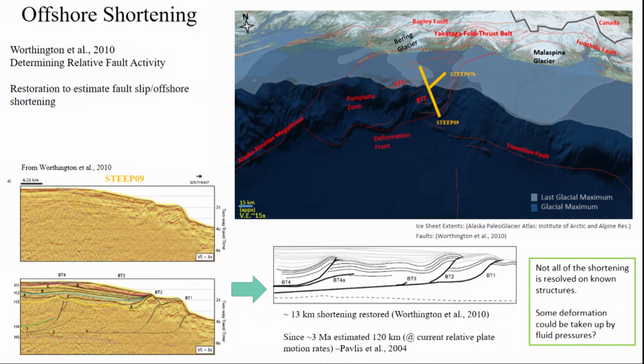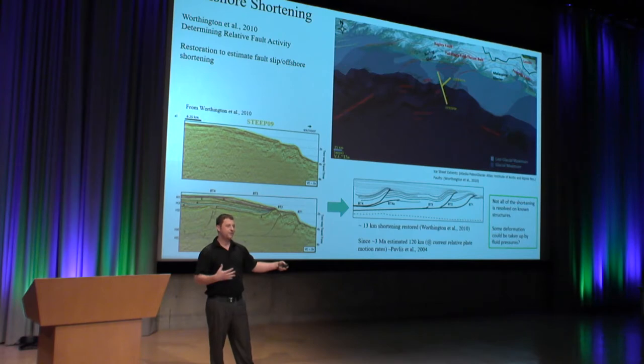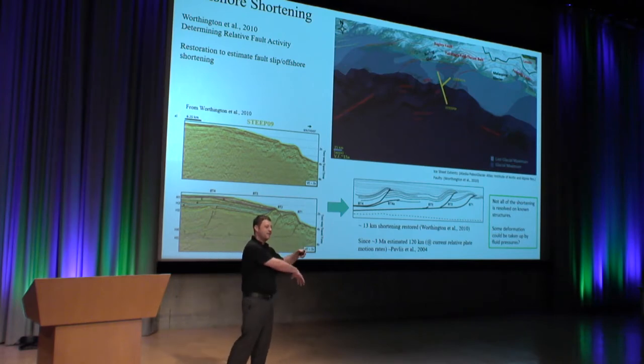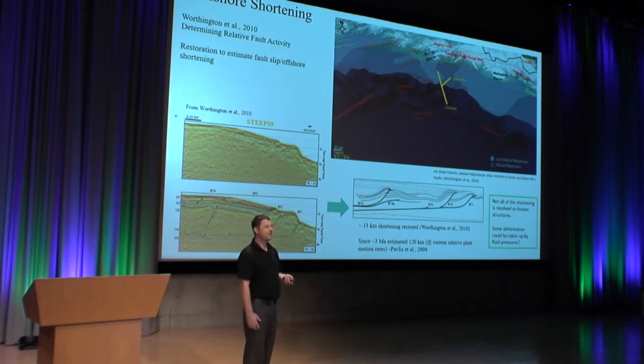What we see here are a couple of seismic lines, one of which has been interpreted. We could imagine trying to restore these faults back to points that should be connected, and estimate how much total shortening has happened as the Pacific Plate is being subducted under North America. What we see is about 13 kilometers offshore, explained by offsets in the seismic data. But we know that since about three million years ago, the total system has to have experienced about 120 kilometers of total convergence.